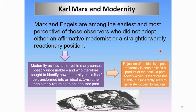Why have I not mentioned Engels and modernity, but only Marx and modernity? Perhaps because of the range of ideas and topics that Marx could touch upon and master. Marx and his collaborator Engels are among the earliest and most perceptive of those observers who did not adopt either an affirmative modernist or a straightforwardly reactionary position.